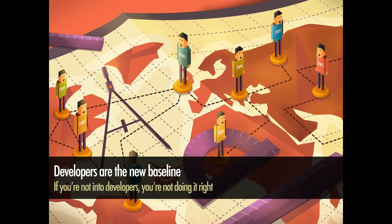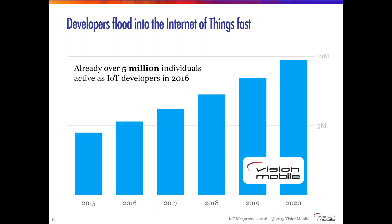Our first trend is that developers are the new baseline — if you're not into developers, you're not doing it right. Developers are flooding into the Internet of Things really fast. We estimate that today, in early 2016, already over 5 million individuals are active as Internet of Things developers. By the end of the decade, we estimate there will be almost 10 million developers active in the Internet of Things.